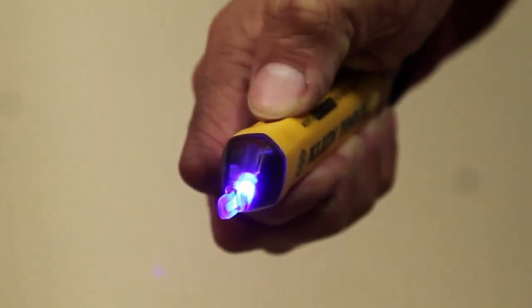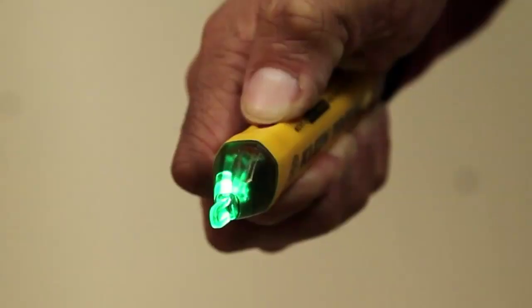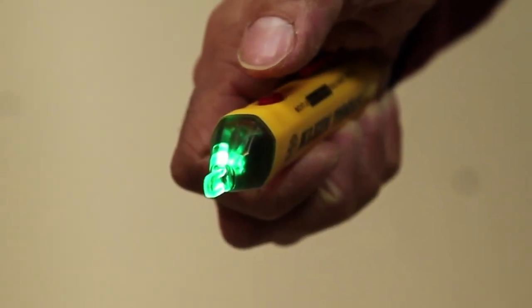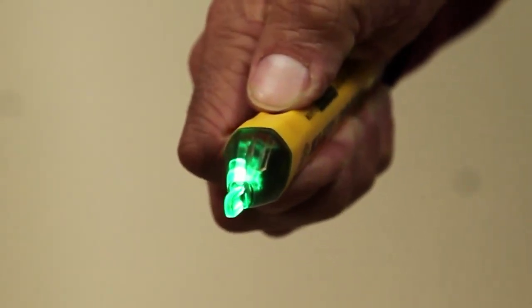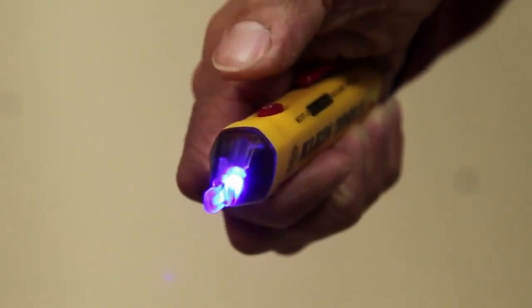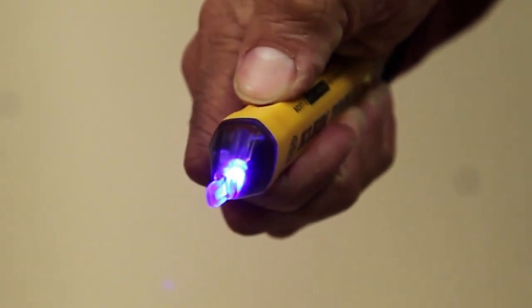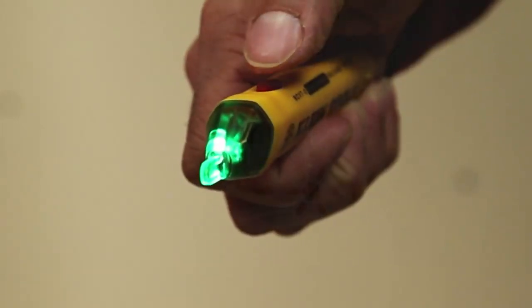Unlike competitive non-contact voltage testers, the NCBT2 can detect between the two ranges automatically. When the blue LED light is illuminated, the NCBT2 is in dual range mode and can automatically detect both standard and low voltages.